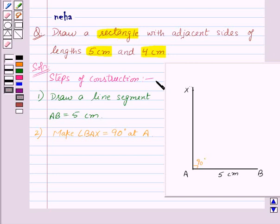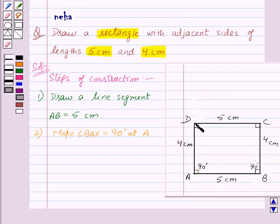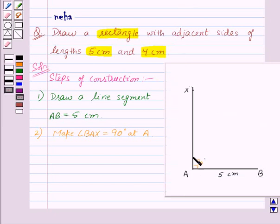Let us go back to our rough figure. Now here we know that AD is equal to 4 cm. So we will take A as center and radius 4 cm. And we will draw an arc to cut AX at point D.